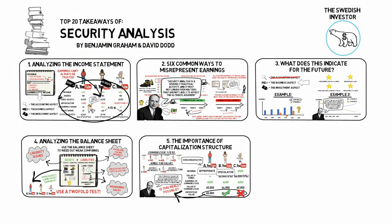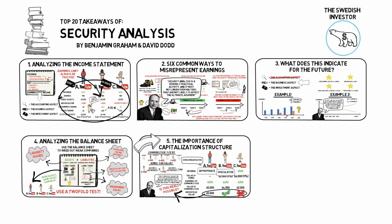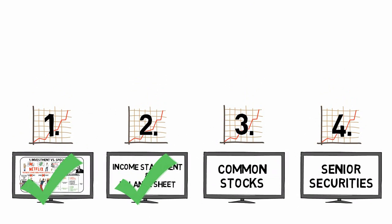Summary time! The first priority of analyzing an income statement is to understand what the true earnings of the past have been. There are many ways earnings can be misrepresented, and by being aware of these tricks the intelligent investor can adjust historical figures to a more correct version. Averages and long records make assumptions about future earnings more reliable. Weed out weak companies through careful study of balance sheets. Some debt can actually be beneficial to investors in common stocks, as the invested amount becomes more productive when a reasonable part of capital is borrowed. In the next video, it's finally time to talk common stocks, and after that, senior securities. Cheers!